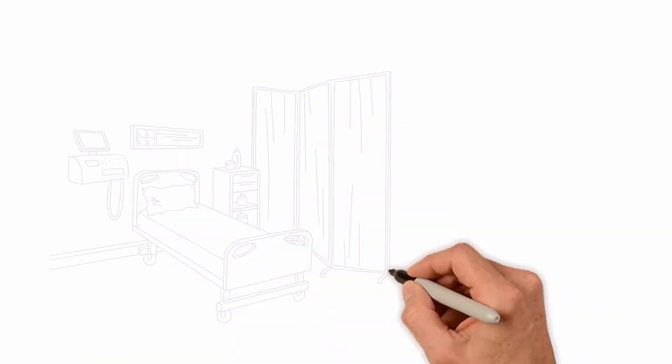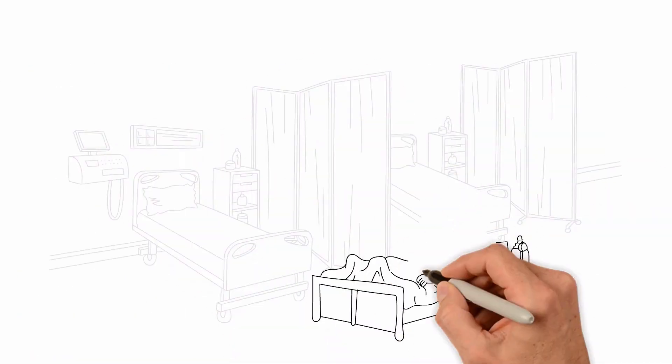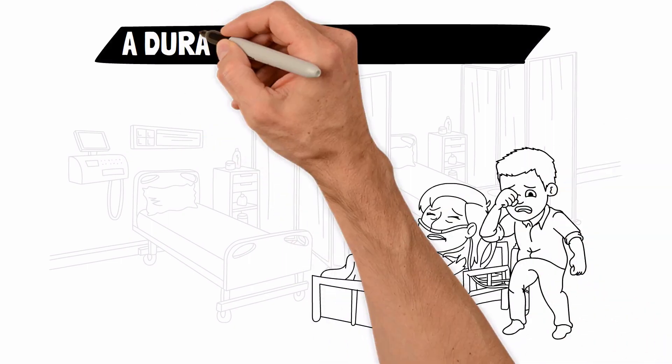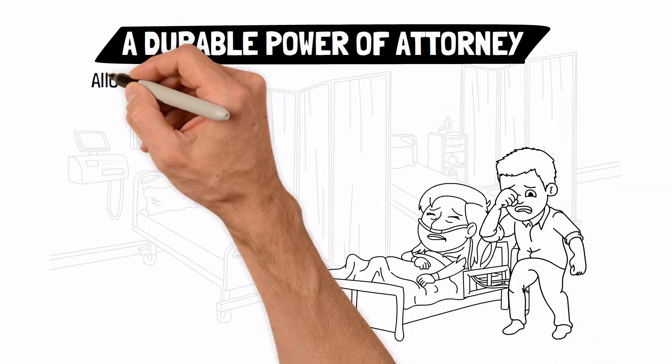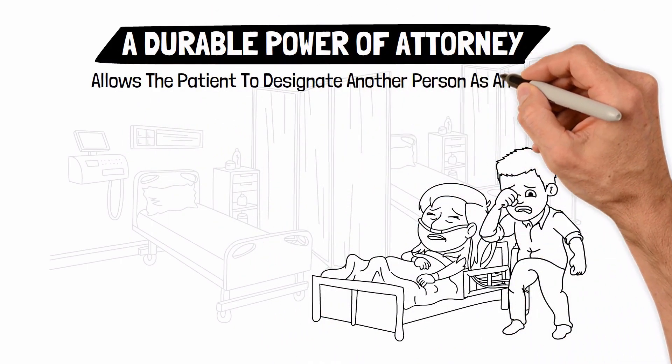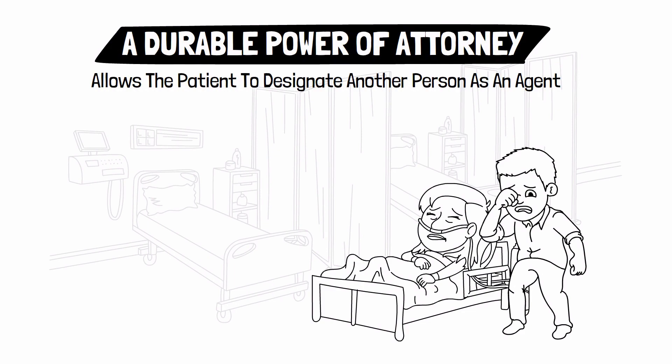A Durable Power of Attorney, on the other hand, allows the patient to designate another person as an agent to carry out their wishes and make decisions on their behalf.